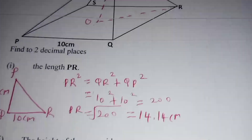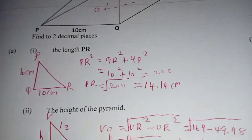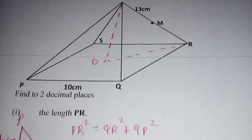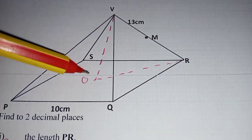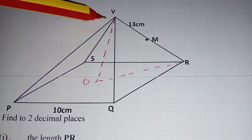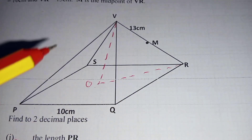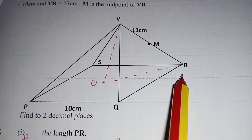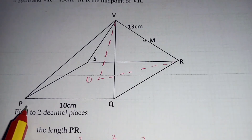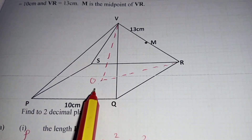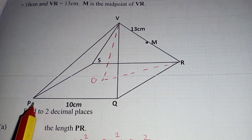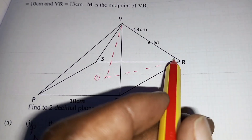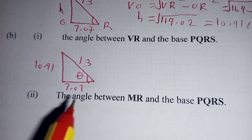The next question is the angle between VR and the base PQRS. The angle between VR and the base is defined as the angle between the line VR and its projection onto the base plane. We consider this diagram — the projection of VR onto the base gives us the relevant angle at point R.